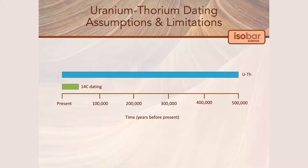So for what we do at Isobar Science, the best samples for uranium-thorium dating are between about 500,000 to 400,000 calendar years before present.